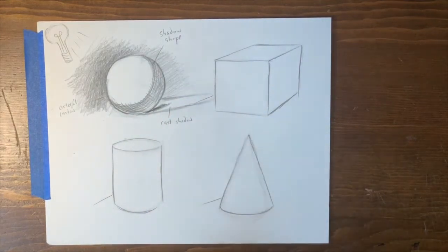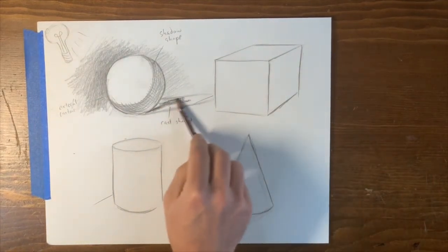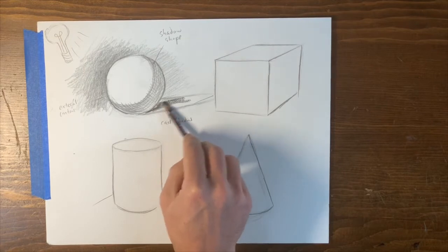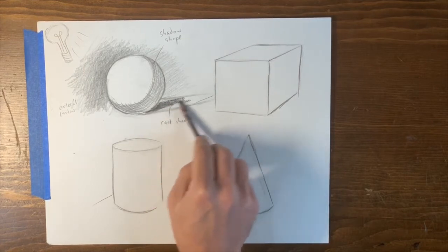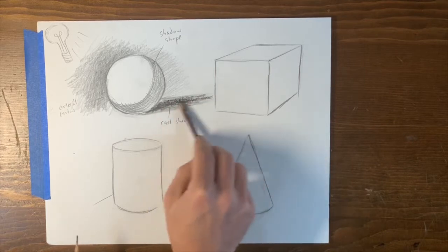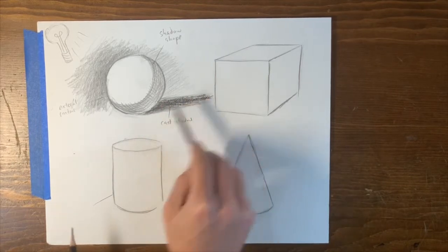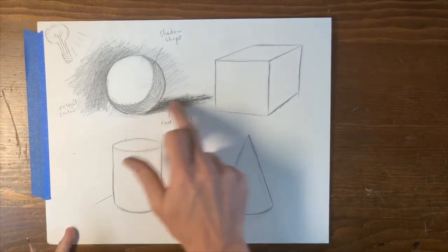And just mask in that cast shadow. You might be asking, well, can I smudge? You can smudge in an area like the cast shadow.